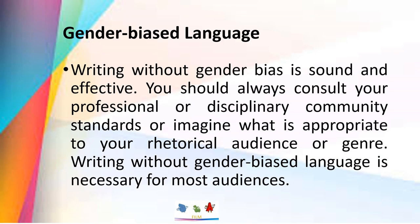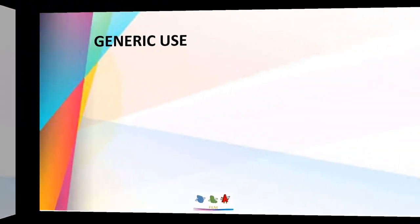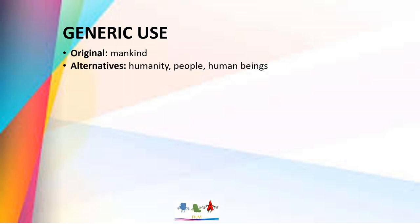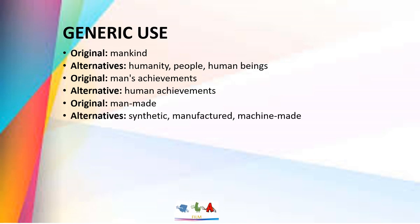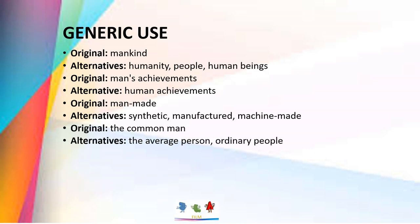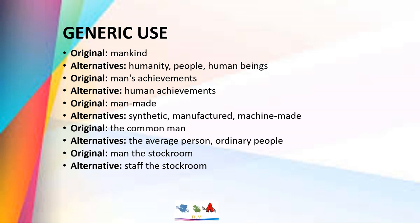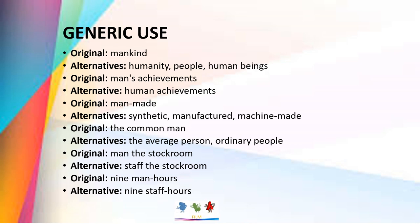Then we have gender-biased language. Writing without gender bias is sound and effective. Always consult your professional or disciplinary community's guidelines on what is appropriate. Here are some alternatives: instead of 'mankind,' use 'humanity,' 'people,' or 'human beings.' Instead of 'man's achievement,' use 'human achievement.' Instead of 'man-made,' use 'synthetic,' 'manufactured,' or 'machine-made.' Instead of 'the common man,' use 'the average person' or 'ordinary people.' Instead of 'man the structure,' use 'staff the structure.' Instead of 'nine man-hours,' use 'nine staff-hours.'